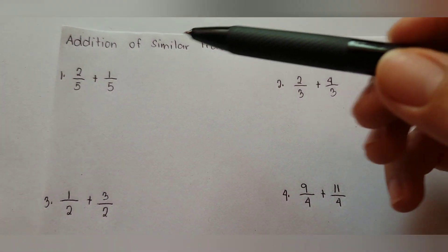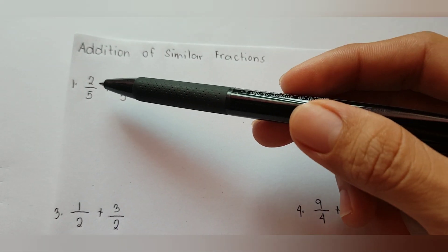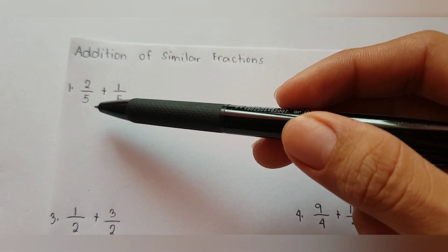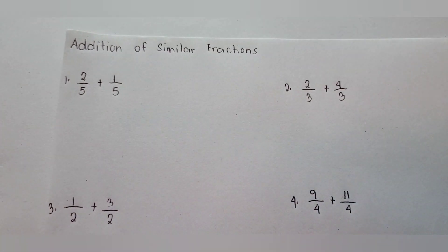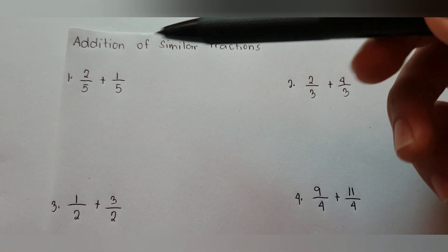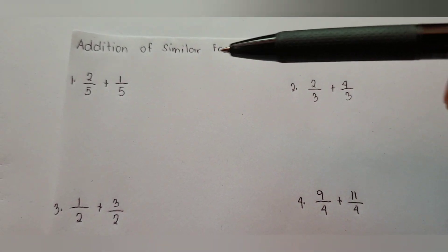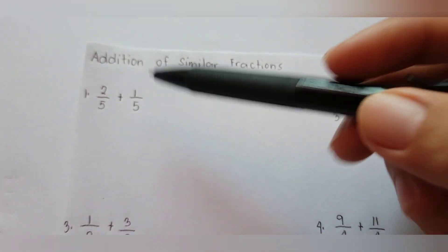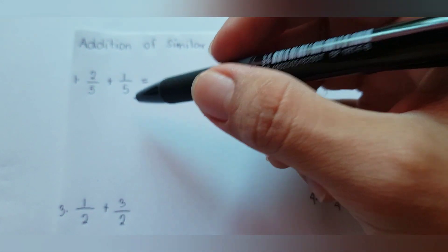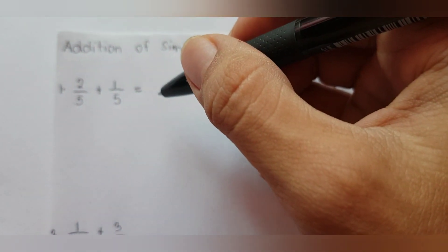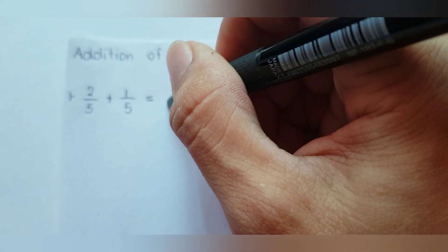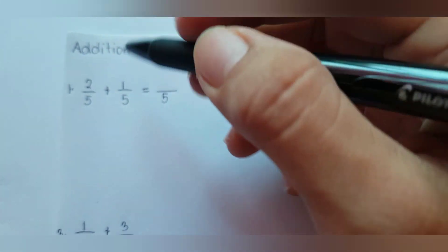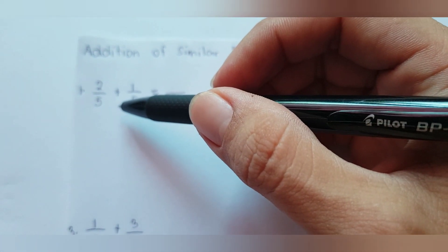We will solve example number one, which is two-fifths plus one-fifth. In adding similar fractions, you simply copy the denominator. So we write two-fifths plus one-fifth, and just copy the denominator, which is five, since both fractions have the same denominator.